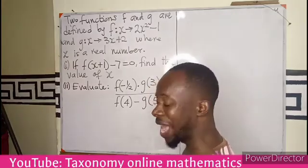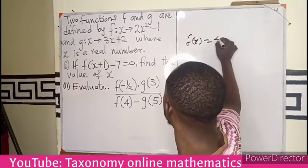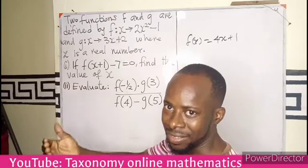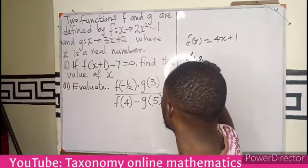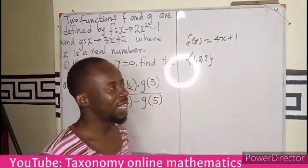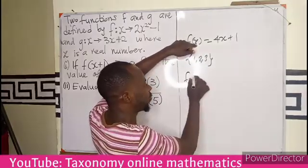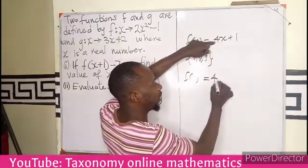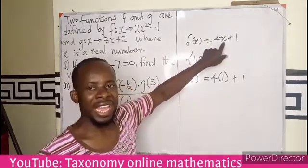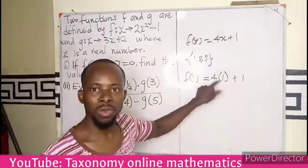Under functions, we can be asked to find images. For example, if I have a function f of x equals x plus 1, I can be asked to find the image of x in the set where x is given as 1, 2, 3. So if I find the image of 1, it means everywhere I see x, I replace x with 1. So whatever value of x I'm having, if the image changes to 1, the value of x must also take effect.